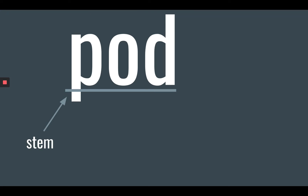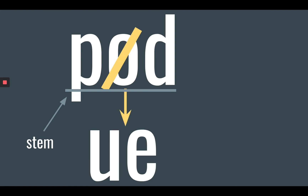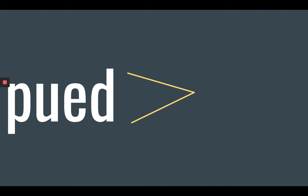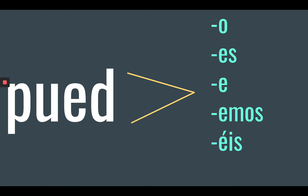Regular verbs, you would just add on your new endings. But these are stem-changing verbs, so a change is going to happen in the stem. And because we know that poder is an O to UE stem-changing verb, we know that the change is going to happen to the O. So this O is going to become UE. Our new stem is pued, and then we would add our new endings: O, ES, E, EMOS, EIS, and EN.